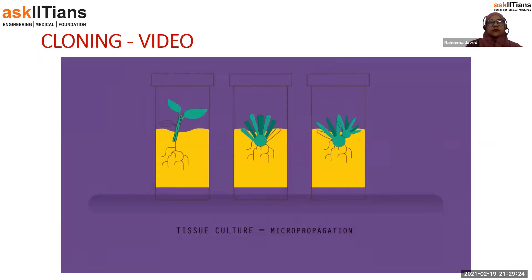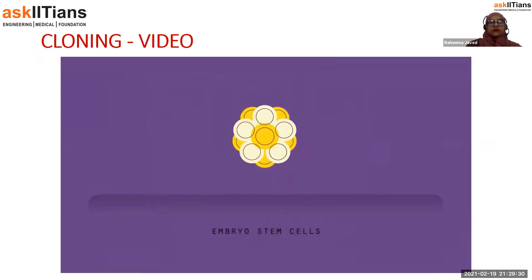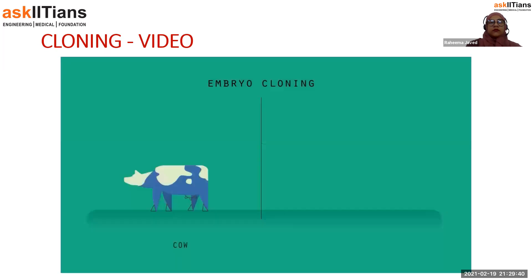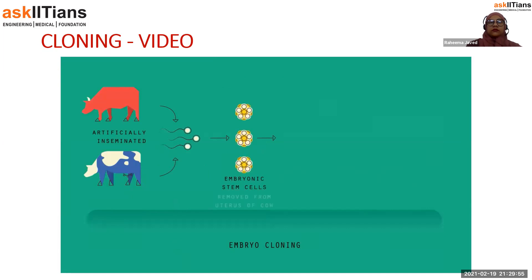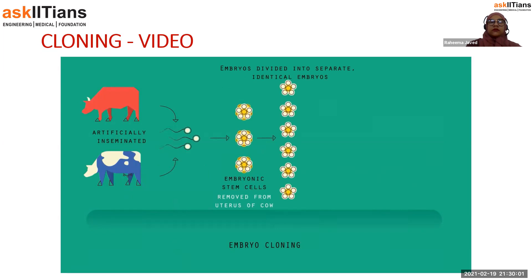However, to produce hundreds of plants from only a small piece of tissue, tissue culture — also known as micropropagation — is used. A few cells are taken from the parent plant and placed onto a nutrient jelly using antiseptic technique. Animals can also be cloned using different techniques. In animals, only embryo stem cells have the capability to differentiate into all the different types of cells found in an adult. There are two methods: embryo cloning and adult cell cloning.